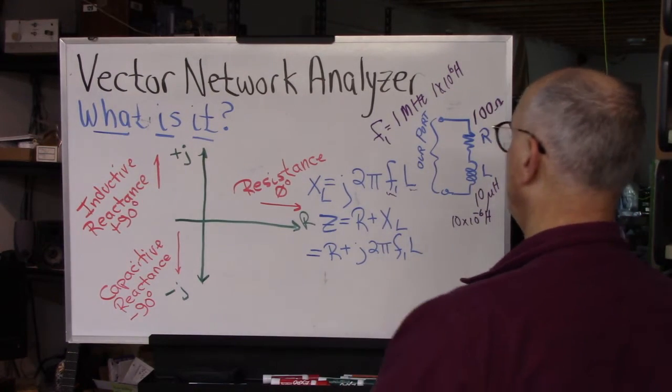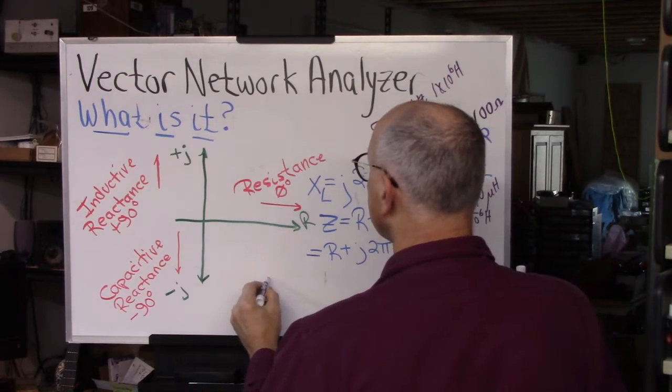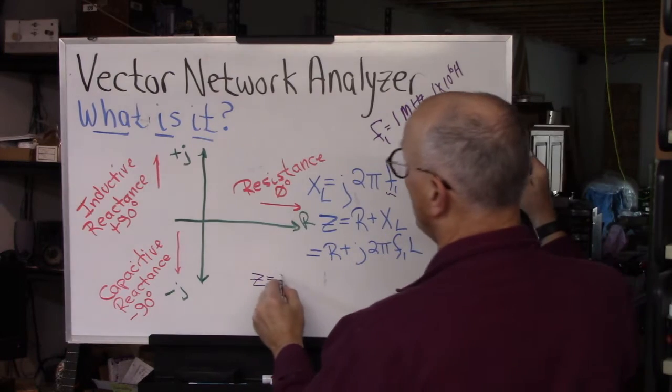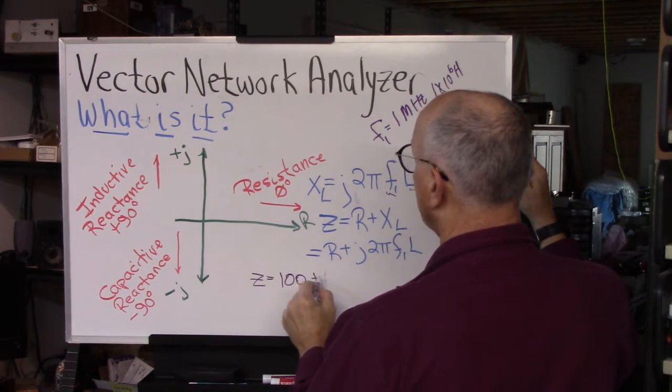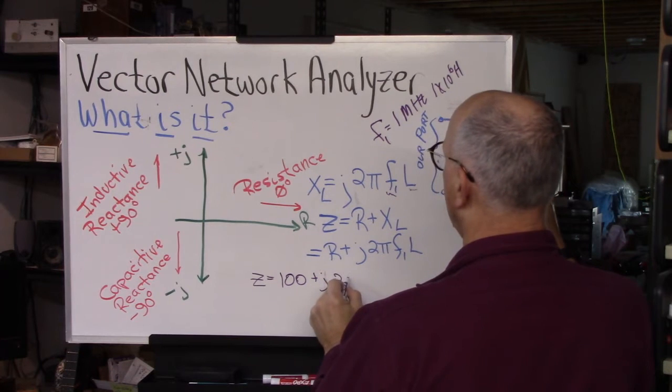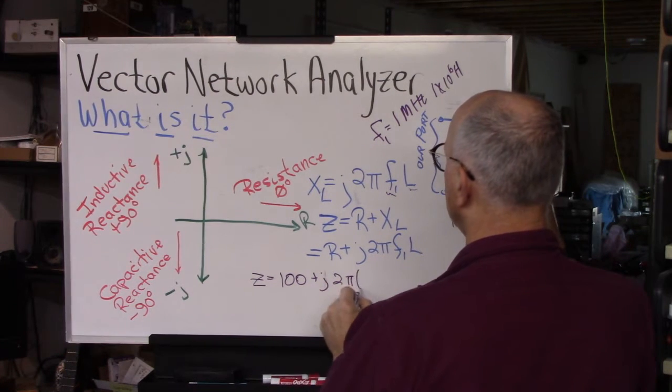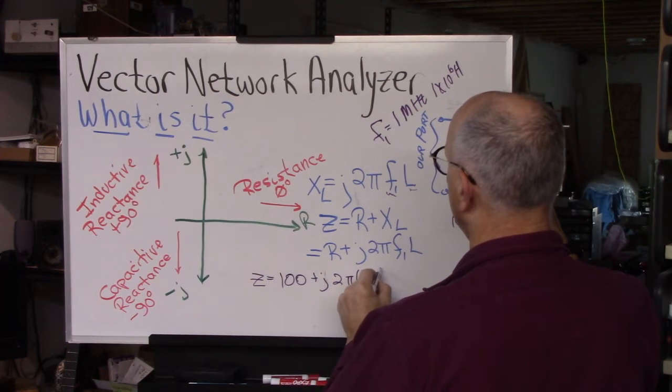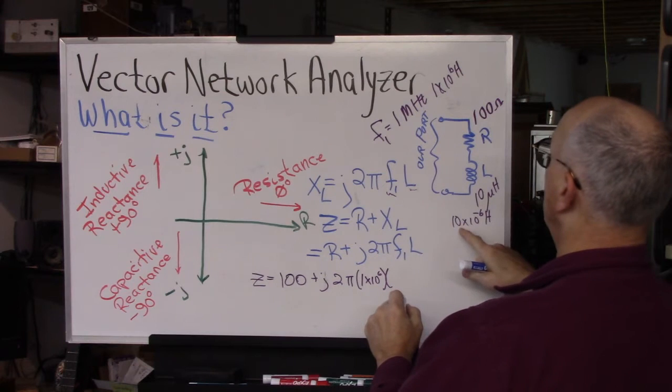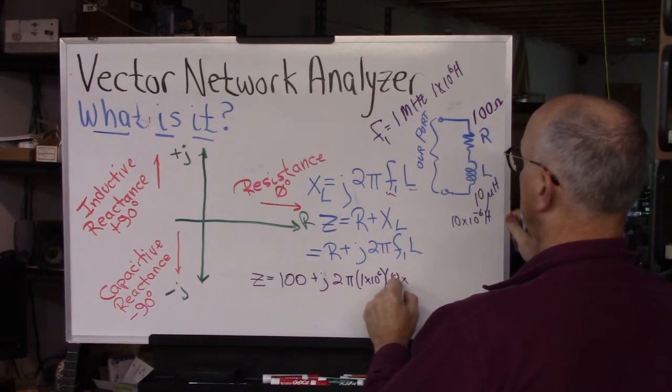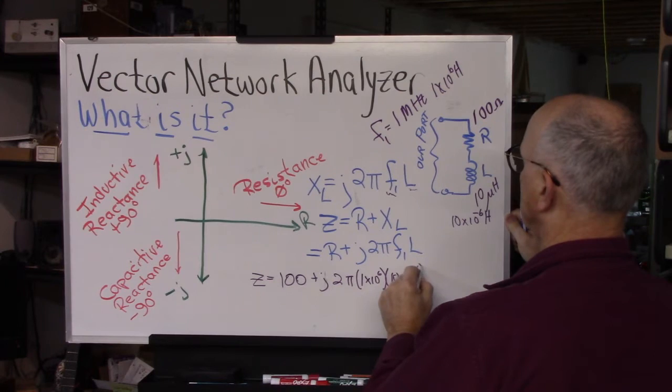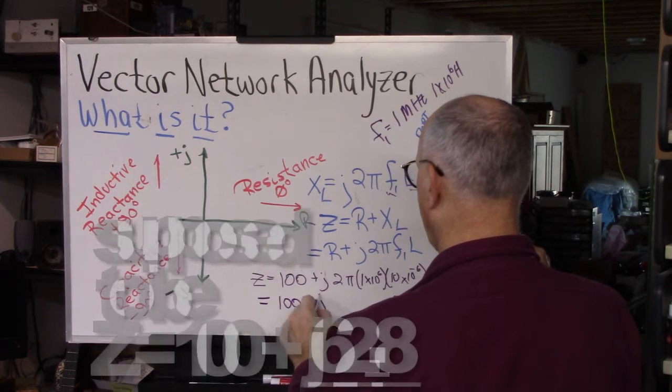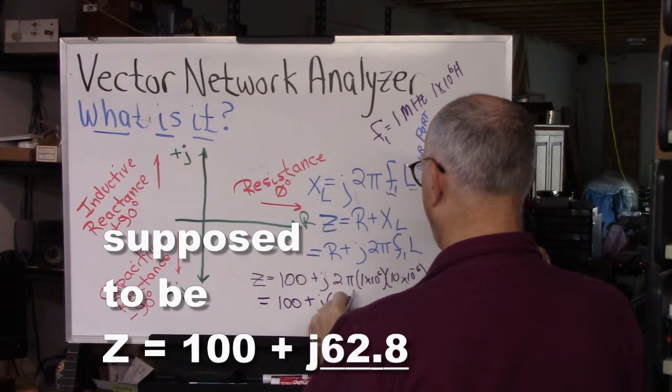So then what do we end up with? Well, we end up with the impedance of this is going to equal the resistance, 100 ohms, plus j times 2 times pi times the frequency, which is 1 times 10 to the sixth hertz times the inductance in Henrys, which is 10 times 10 to the minus 6. And so what we end up with is 100 plus j 68.2.